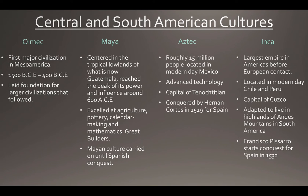The Aztecs were the group the Spanish interacted with most in Mexico. They were conquered by Hernan Cortes in 1519. They were a large group of about 15 million people in modern-day Mexico with advanced technology for the time period. The Incas were the largest group in the Americas before European contact, located in modern-day Chile and Peru in South America. Their capital was Cusco, and they had adapted to live in the highlands of the Andes Mountains. They were conquered by Francisco Pizarro, who started the conquest for Spain in 1532.